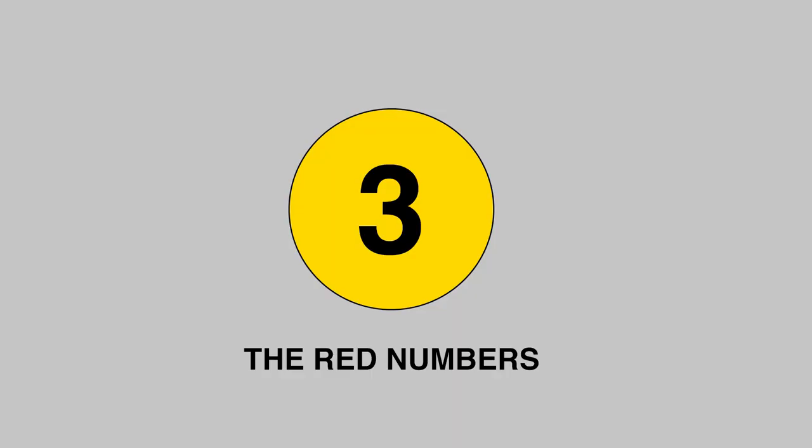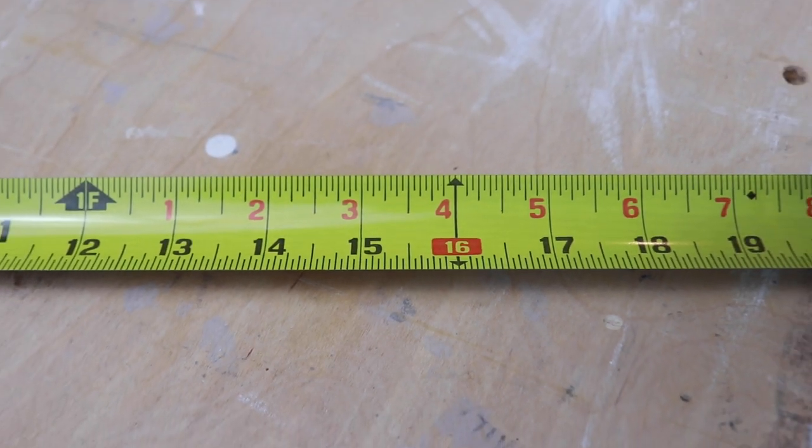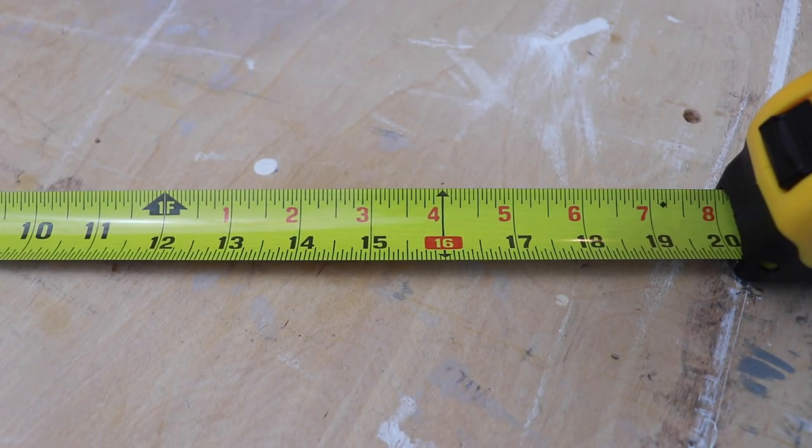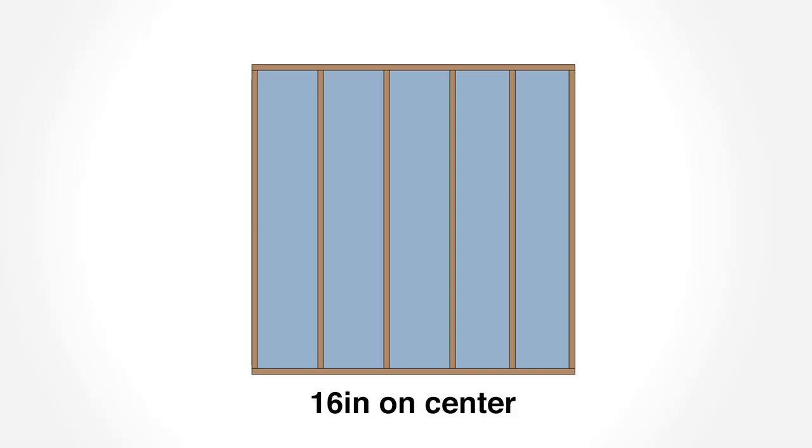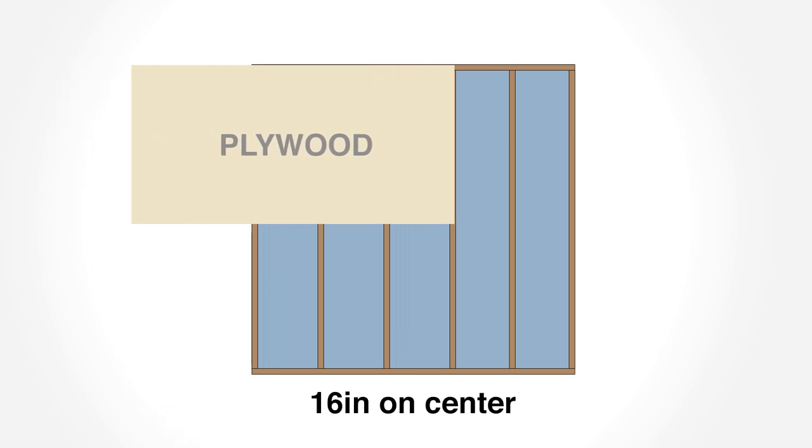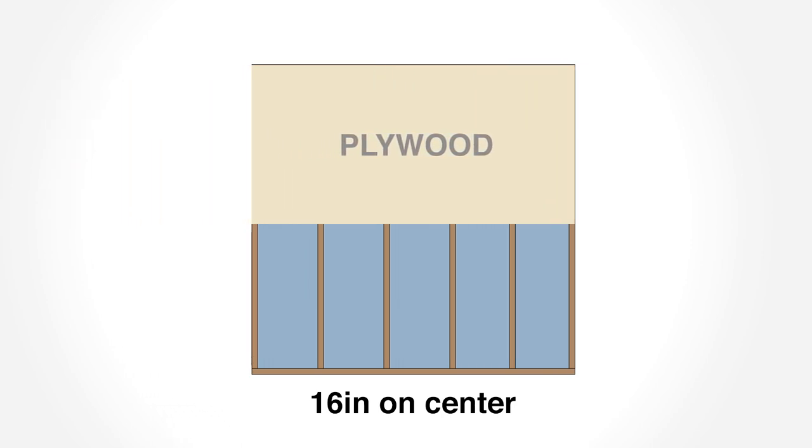Number 3: The red numbers. Many tape measures add red numbers or some other graphical standout every 16 inches. This is a very common spacing for studs in framing a house. This spacing allows for six supports in an eight foot span. This spacing also includes the ability to add an eight foot sheet long piece of plywood without cutting it.